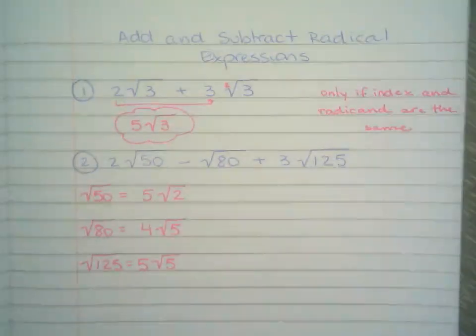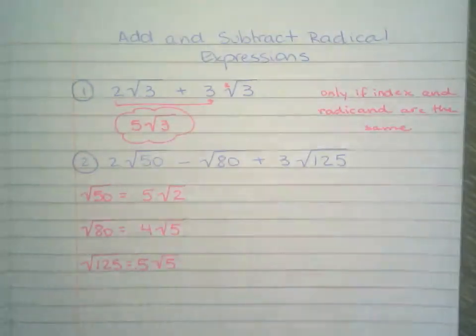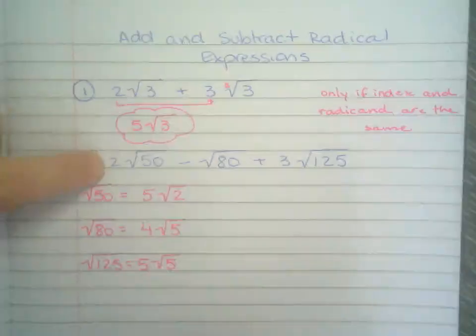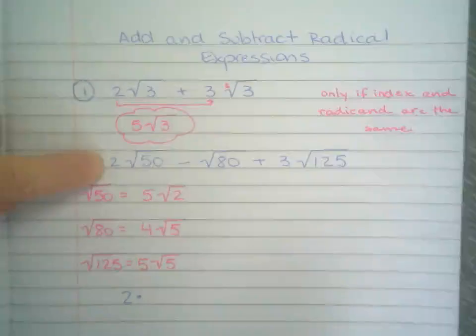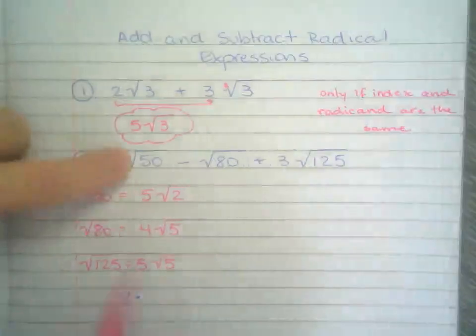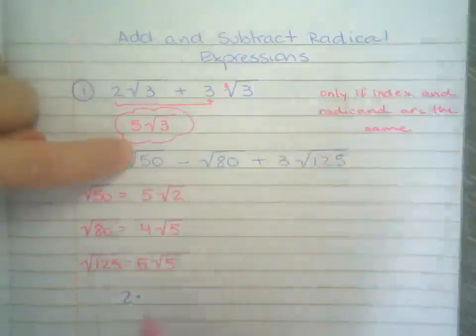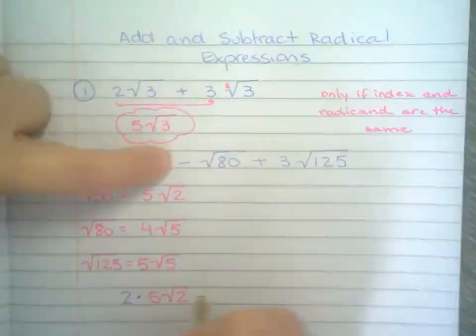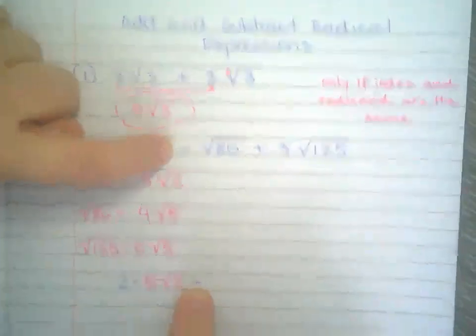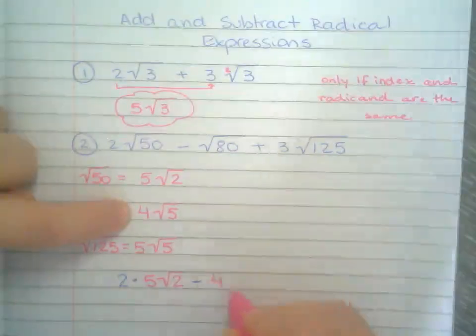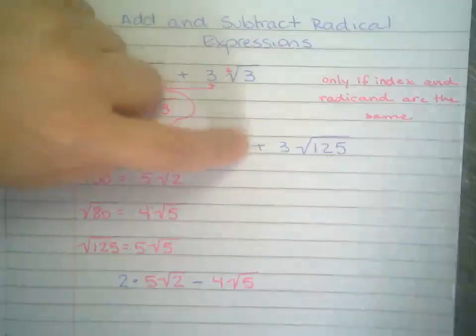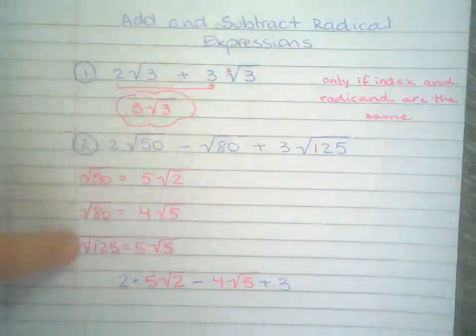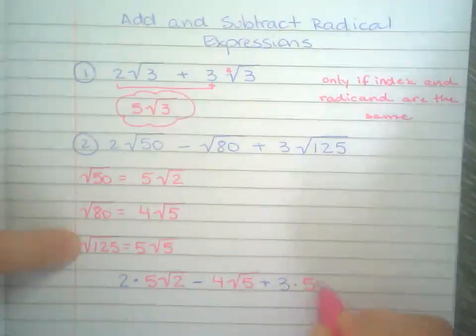Now I'm going to bring them all back together. I'm going to bring this 2 right here from the question, times—I have square root of 50 is the same thing as 5√2, so I'm going to bring that down right there. So 5√2. Now minus—that minus is from the question. Square root of 80 is the same thing as 4√5, plus 3 from the question. Square root of 125 is 5√5.